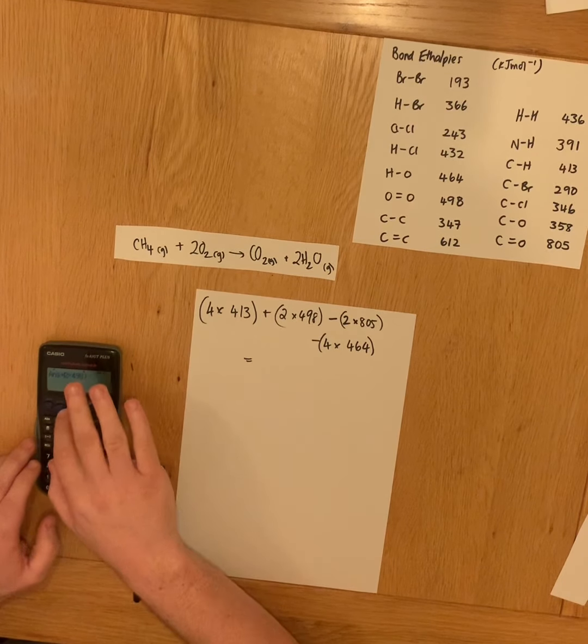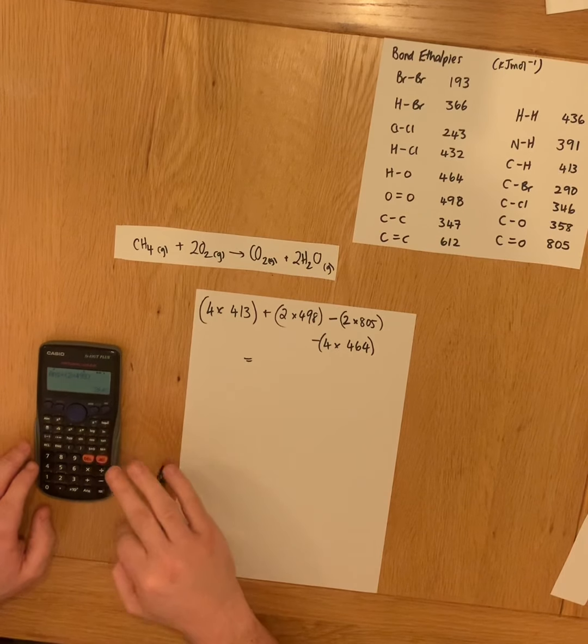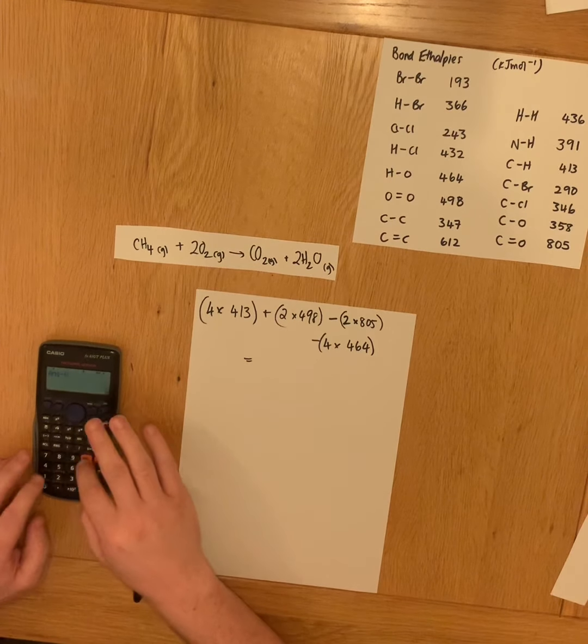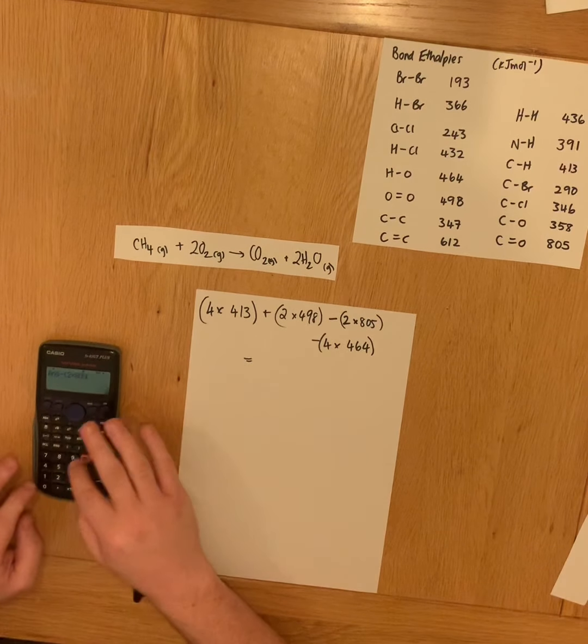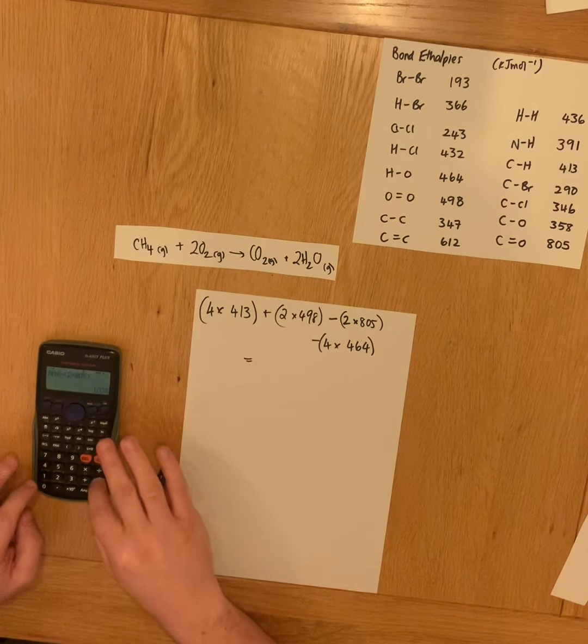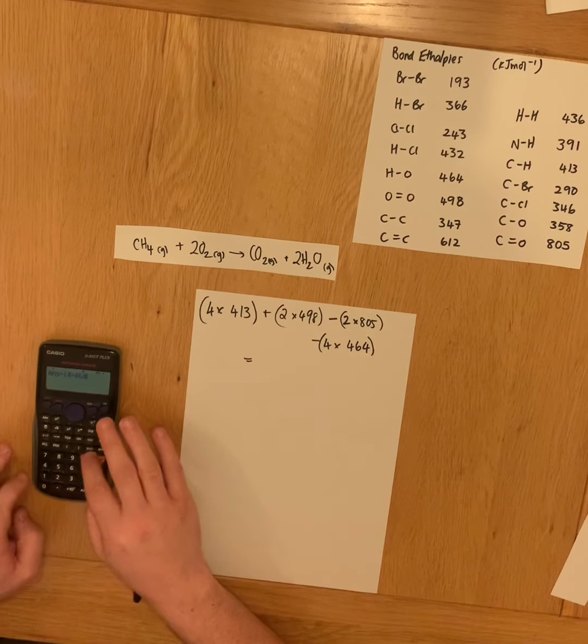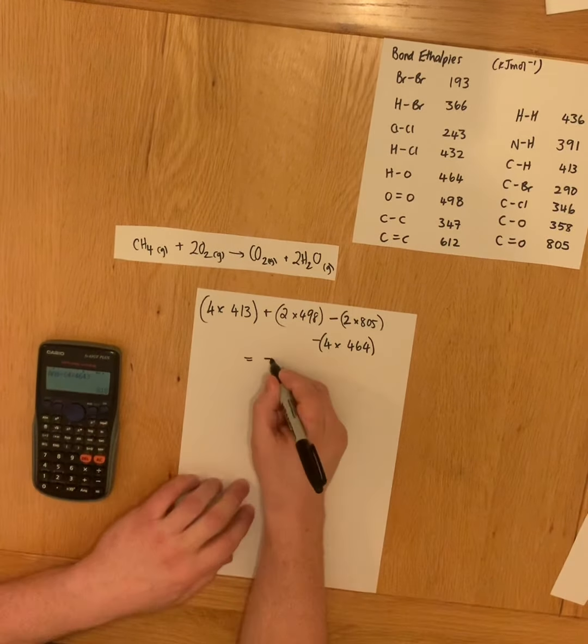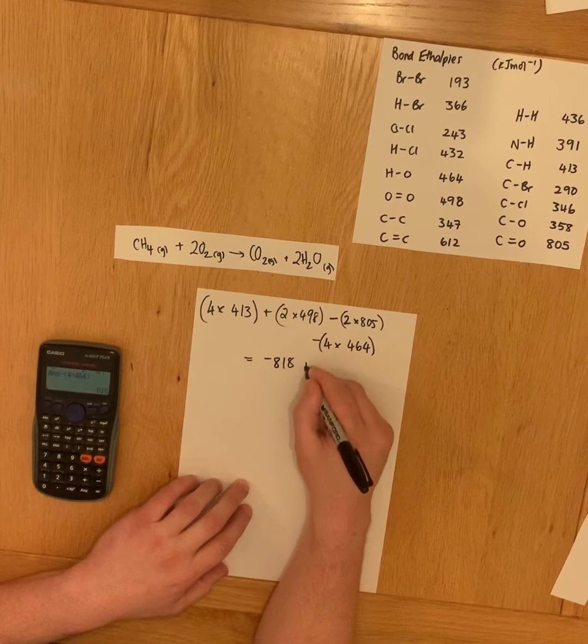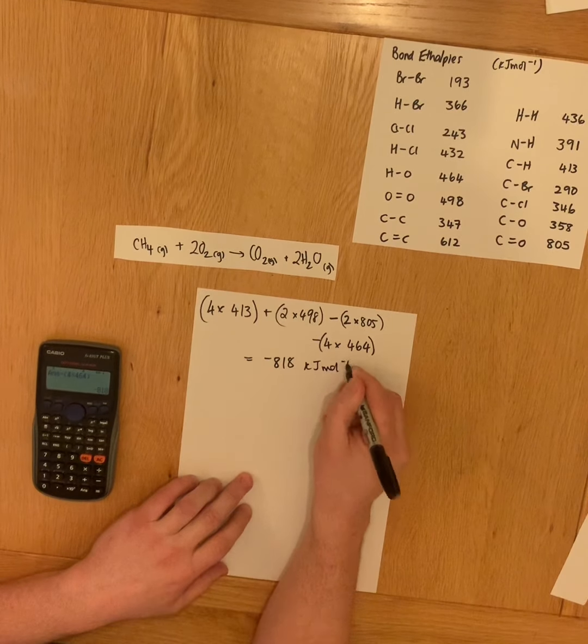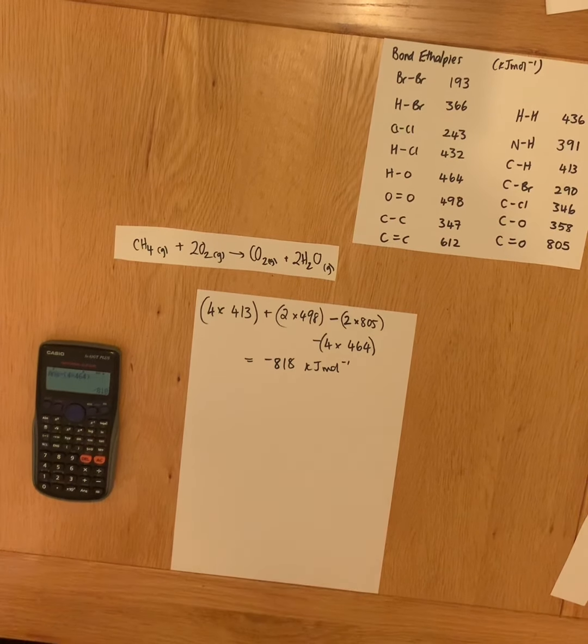Let's just quickly pop that into the calculator. All right, gives us a value of minus 818 kilojoules per mole. Wonderful. Hooray.